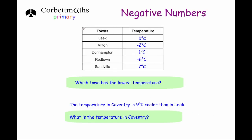The next question gives us the temperatures in five towns: Leek, five degrees Celsius; Milton, minus two degrees Celsius; Donhampton, one degree Celsius; Red Town, minus six degrees Celsius; and Sandville, seven degrees Celsius. The first question says: what town has the lowest temperature? Minus six is the lowest number, and that's in Red Town. So the answer is Red Town — Red Town has the lowest temperature.